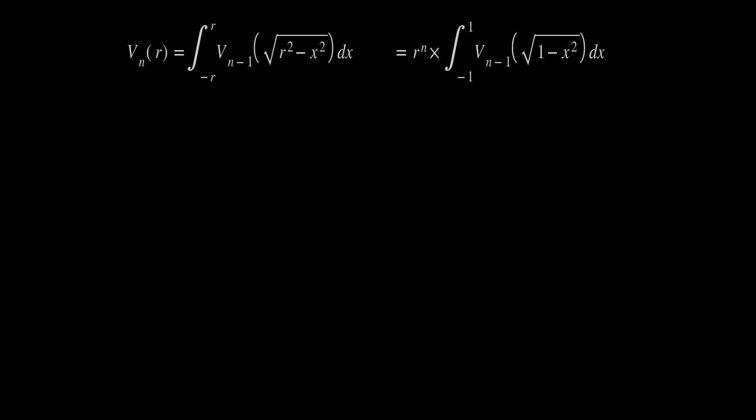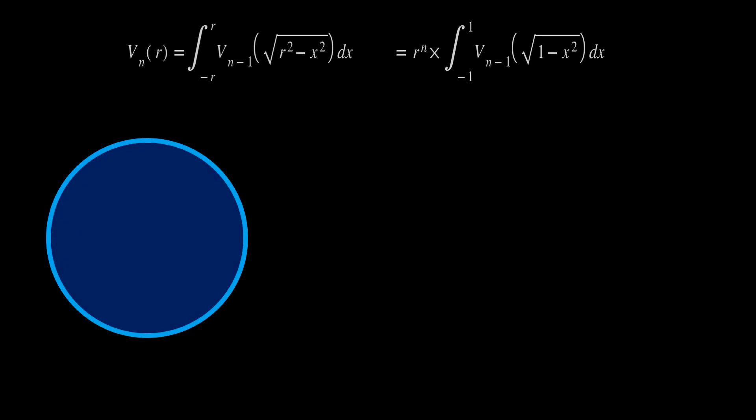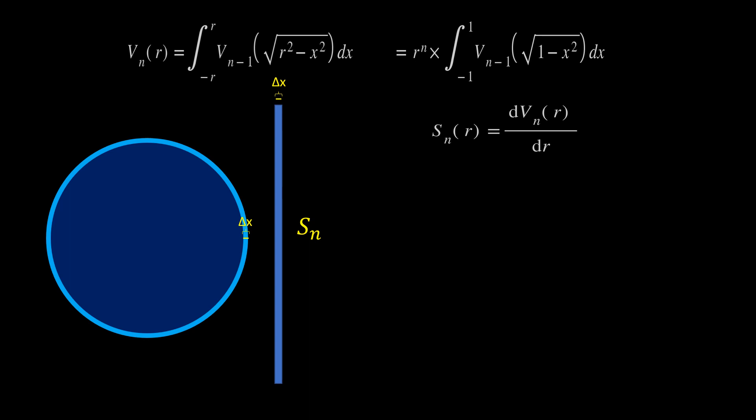Now, what if we want not the hyper-volume but the hyper-surface area of a sphere? We simplify by considering the two-dimensional sphere — a circle — and increasing its radius by a small increment delta x. The resulting thin ring is the increased area; it has width delta x and height equal to the surface we want to calculate. The difference in hyper-volume equals the surface area times the increment in radius. So the hyper-surface of an n-dimensional hypersphere equals the derivative with respect to the radius of its hyper-volume.